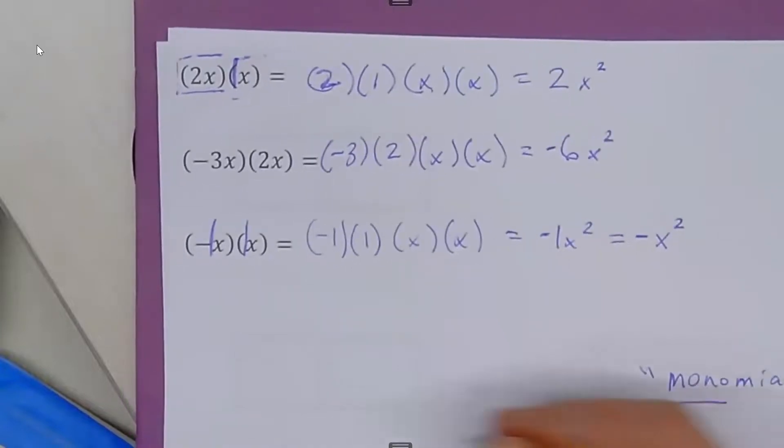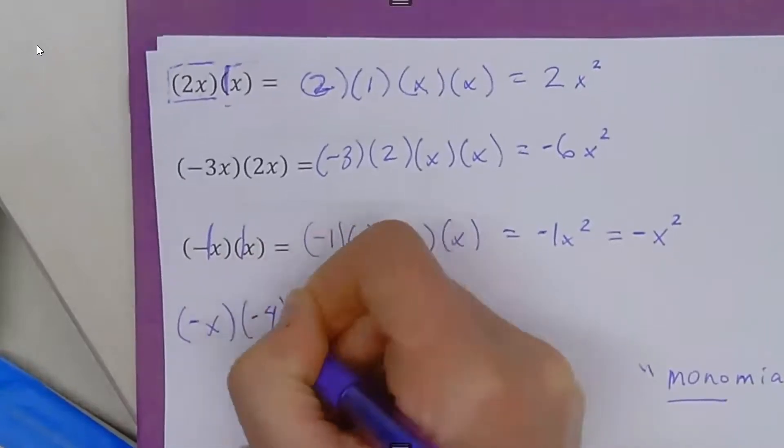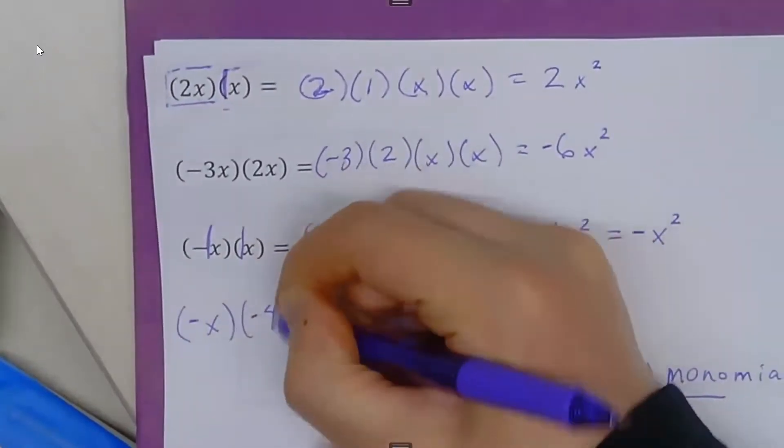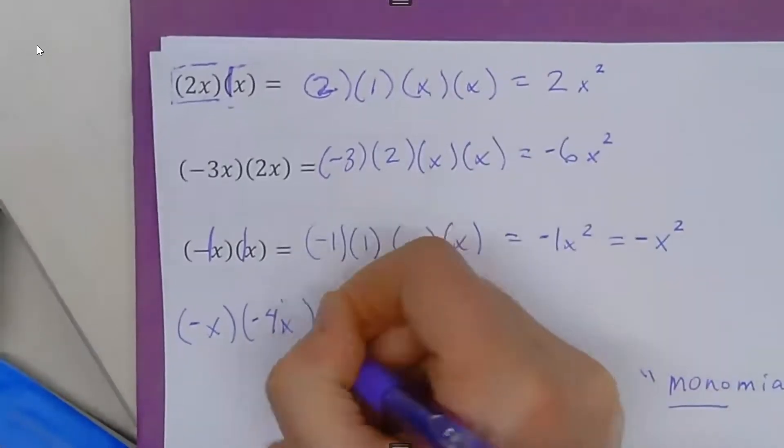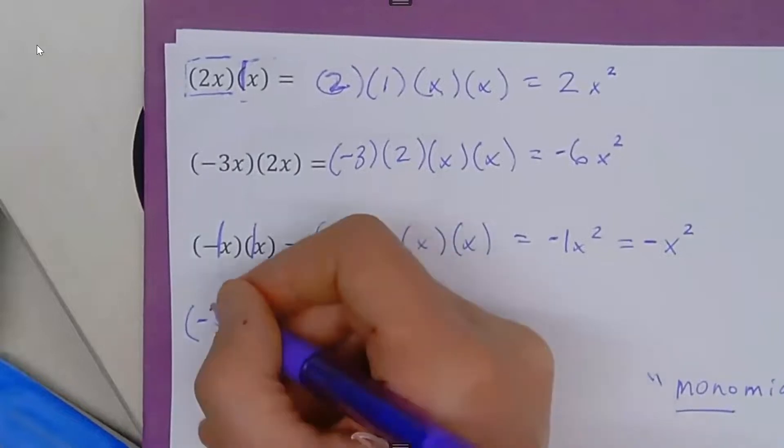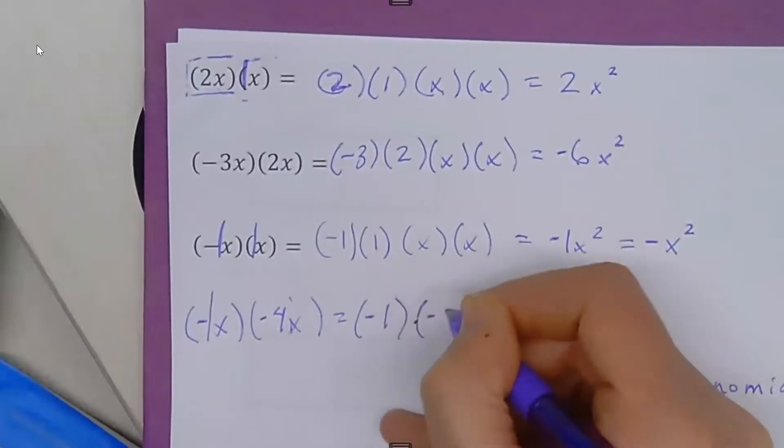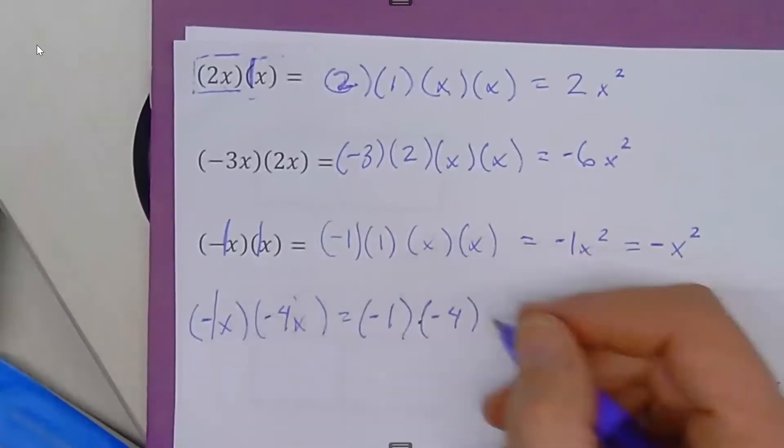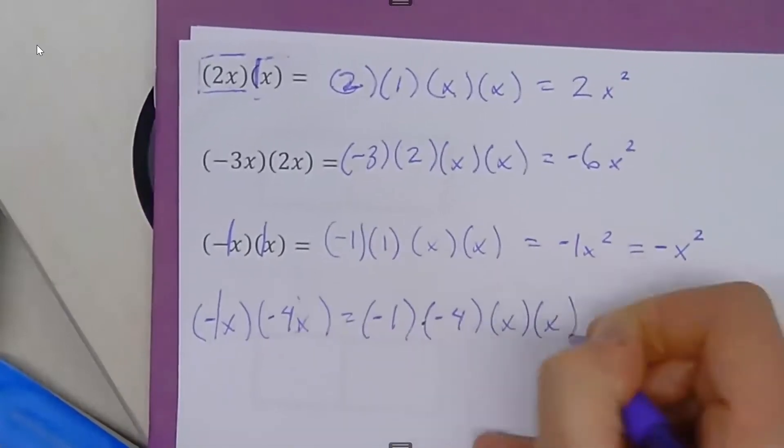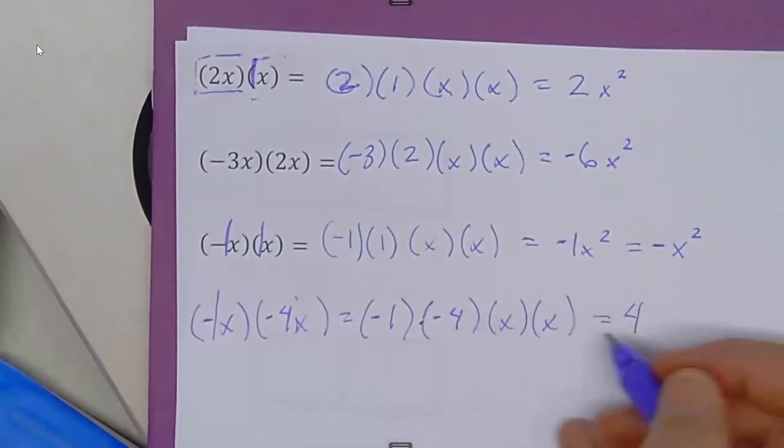Finally, I want to do one more example. Let's say I have negative x times negative 4x. Again, it's negative but then it's naked, so that's negative 1x. That means you have negative 1 times negative 4 times x times x. Negative 1 times negative 4 is positive 4. Negative times negative is positive. Then x times x is x to the second power, or x squared.